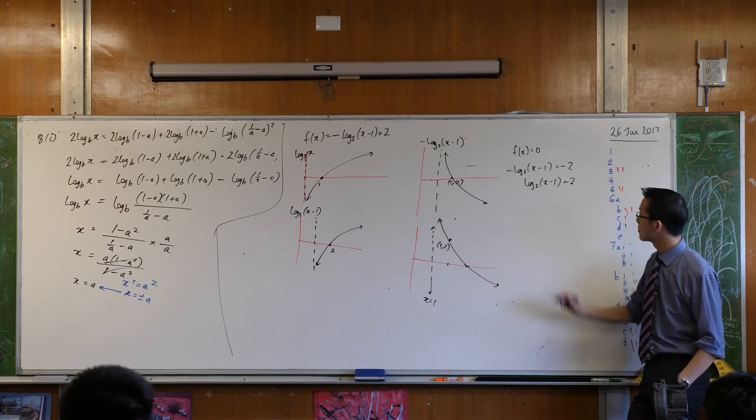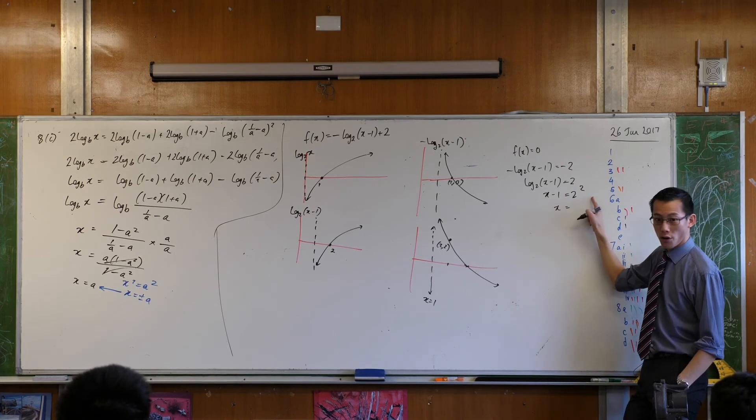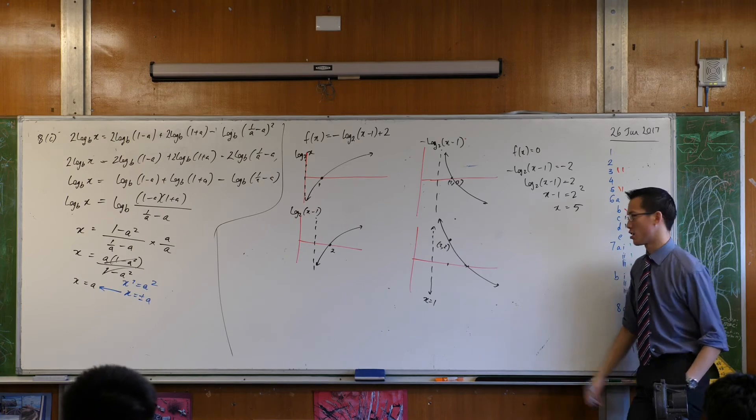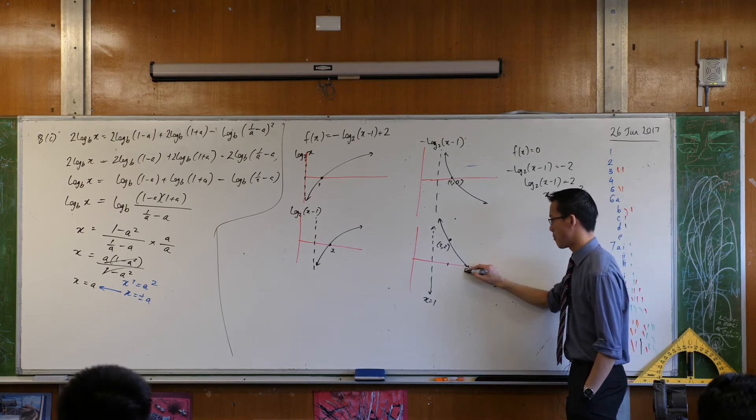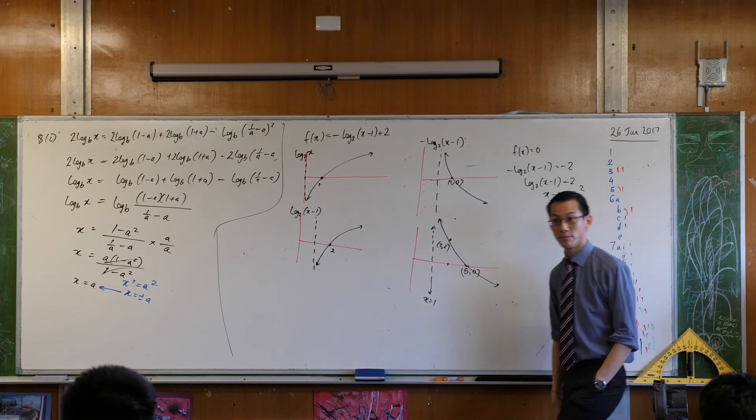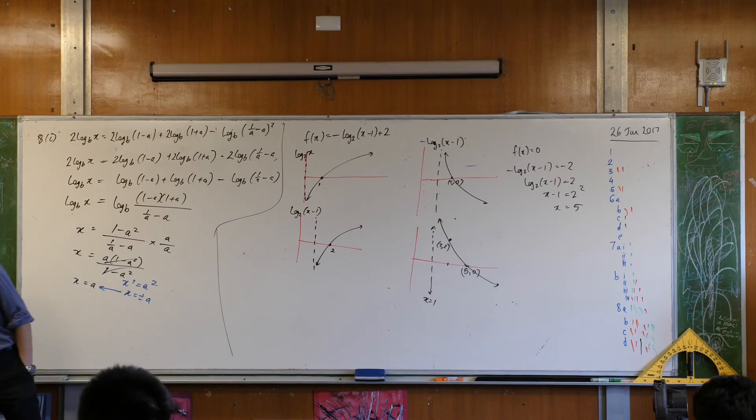2 to the 2 equals x minus 1. Very good. So x is going to be 4 plus 1. Are you okay with that? So my scale is not the greatest, but that is a point there. And that's actually 5, 0. So I'm home. I'm done. Did I label my asymptote? Yeah. I'm done. Let me just double check.